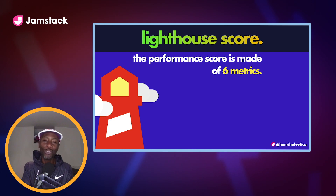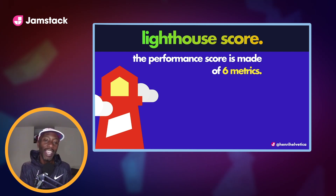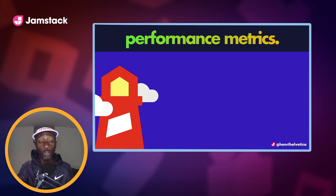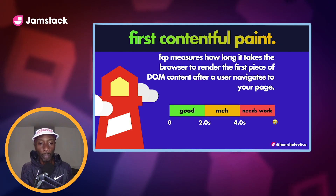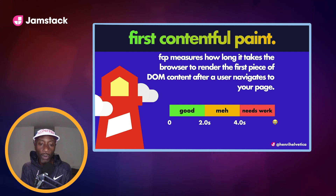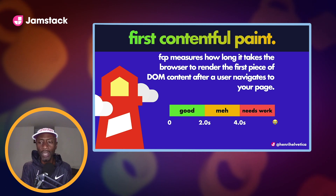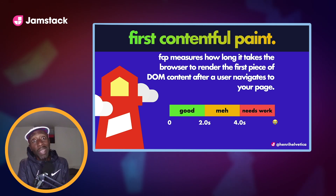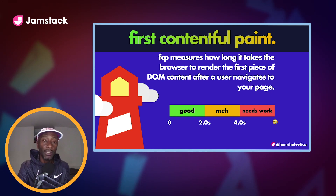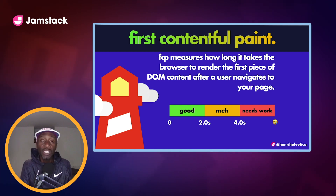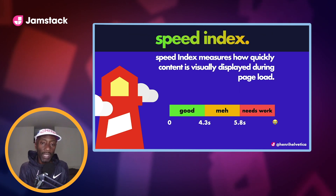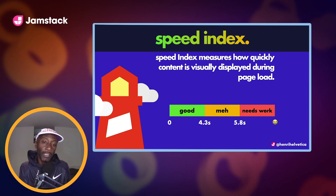The performance score is made of six metrics. I'll go through them in the same order you'd see them in your audit report. First: First Contentful Paint (FCP) — measures how long it takes the browser to render the first piece of DOM content after a user navigates to your page. Essentially it's the first semblance of content that shows up. Two seconds and faster is considered good, four seconds and above needs work, and between two and four seconds is kind of meh.